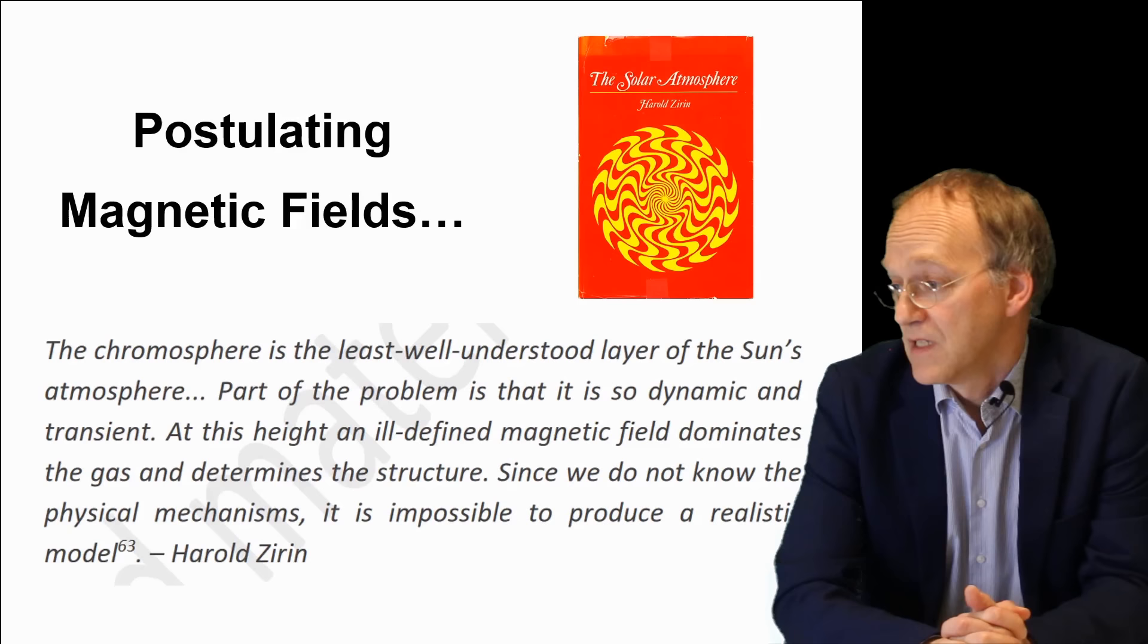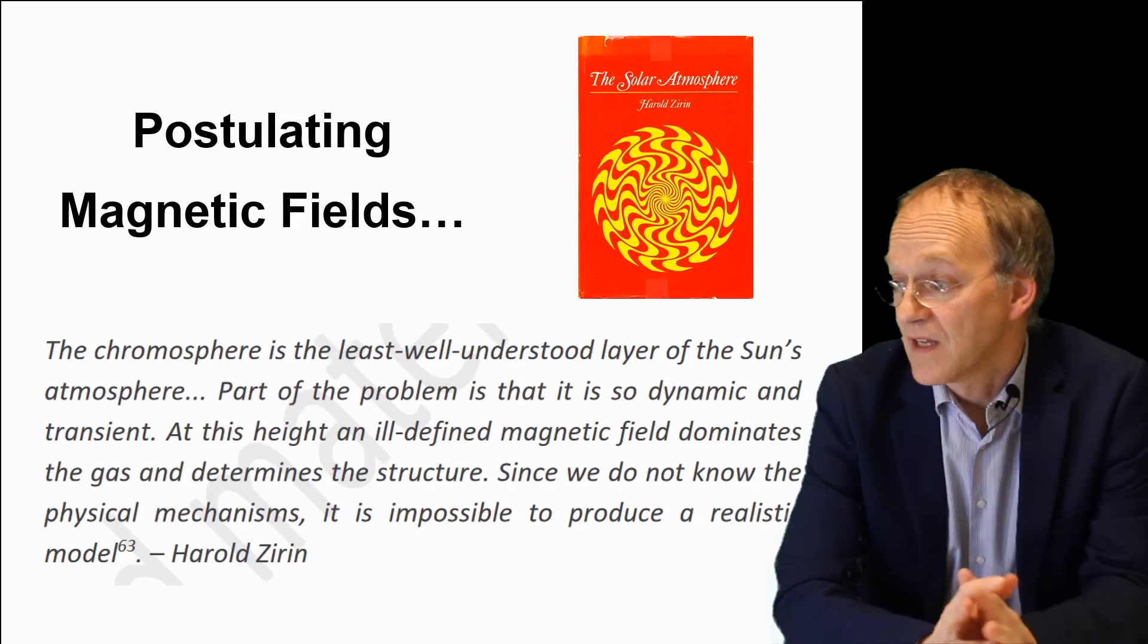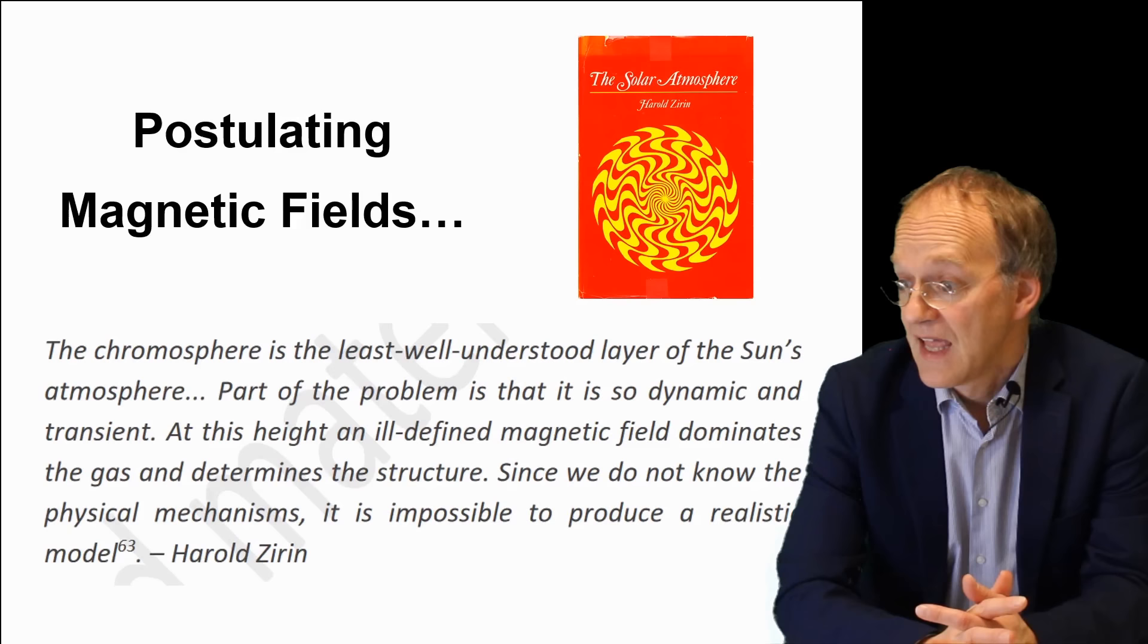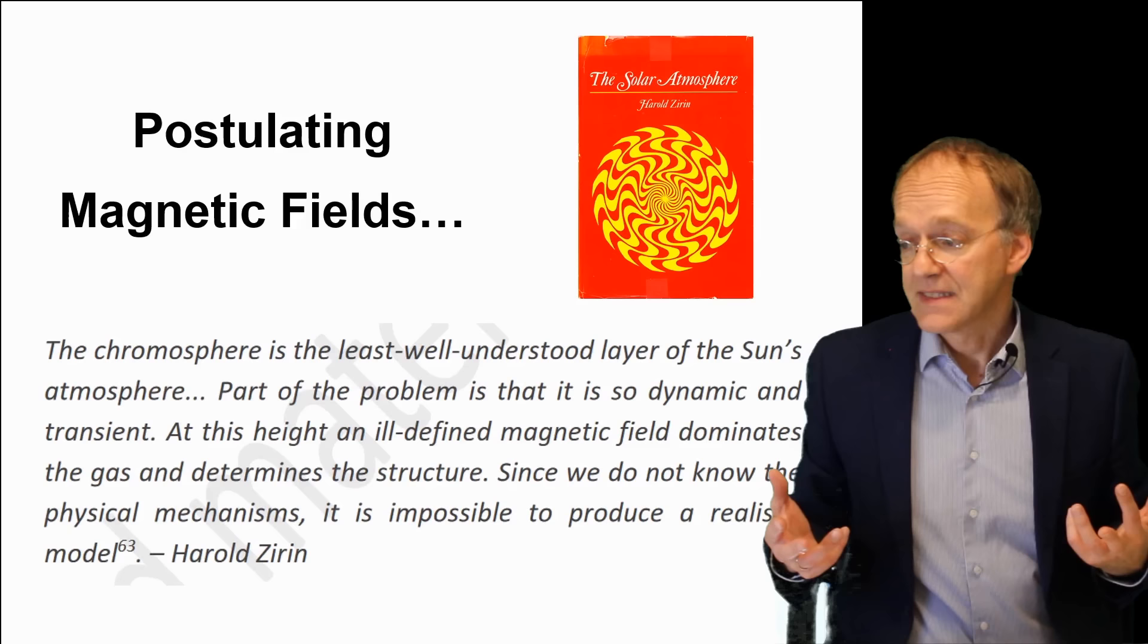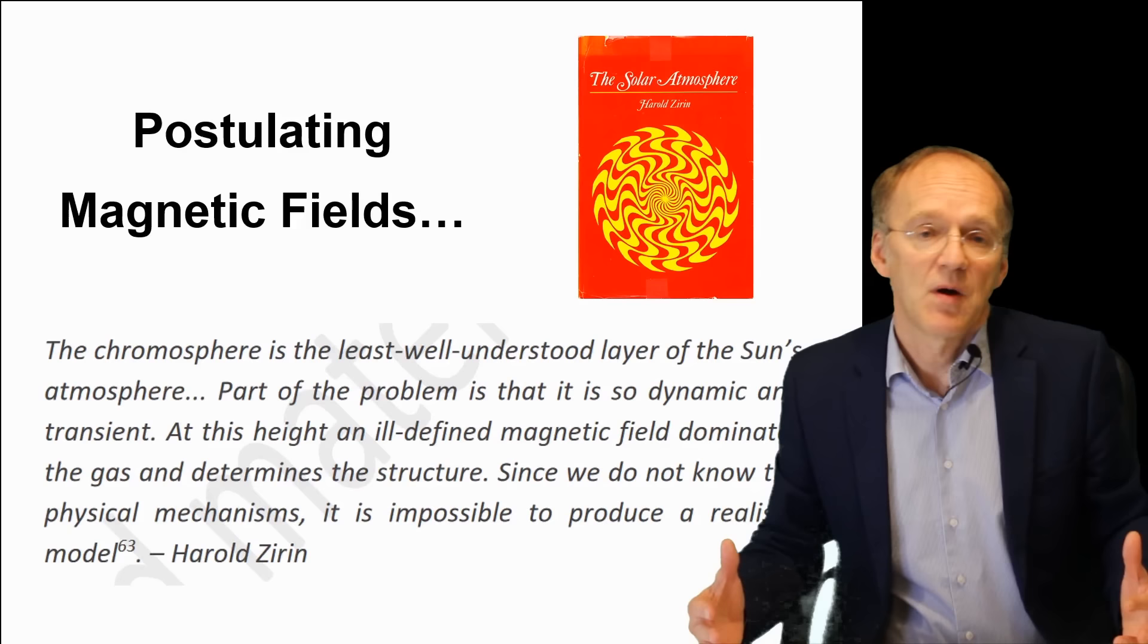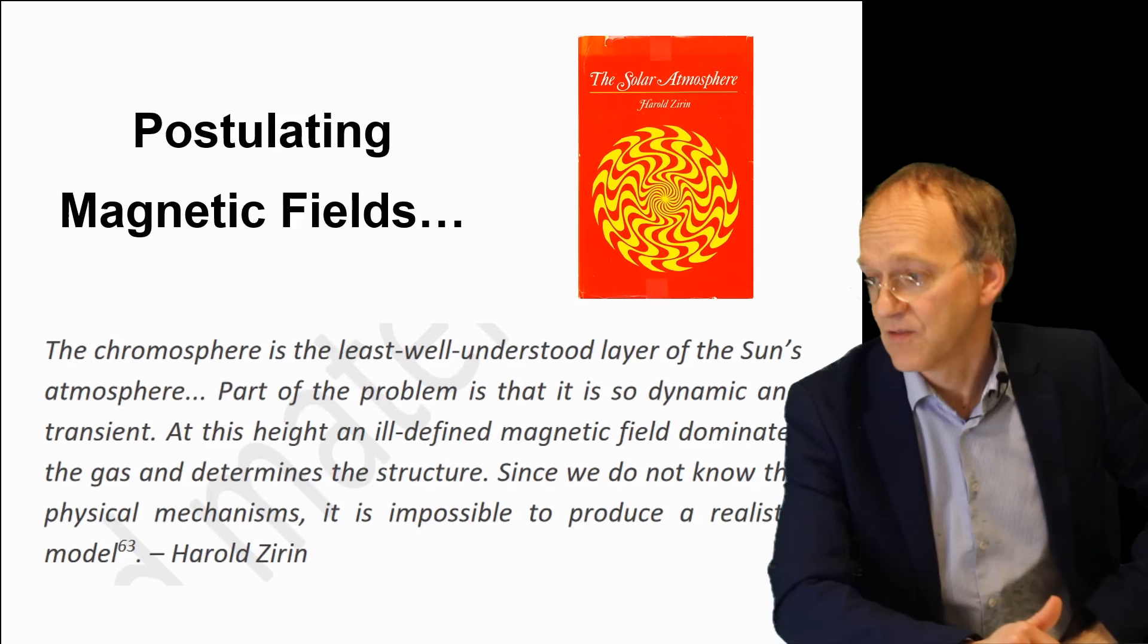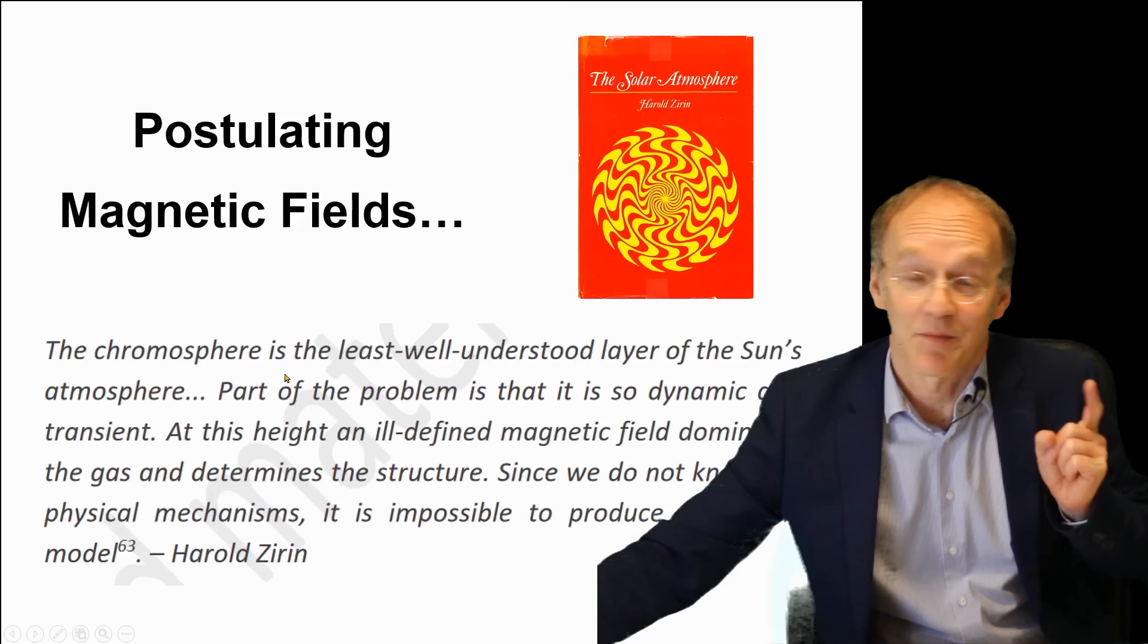And another problem related to these coronal mass ejections. Here is some comment from the renowned astrophysicist Harold Zirin, and he said: 'The chromosphere is the least well-understood layer of the Sun's atmosphere. Part of the problem is that it is so dynamic and transient. At this height, an ill-defined magnetic field dominates the gas and determines the structure. Since we do not know the physical mechanisms, it is impossible to produce a realistic model.'